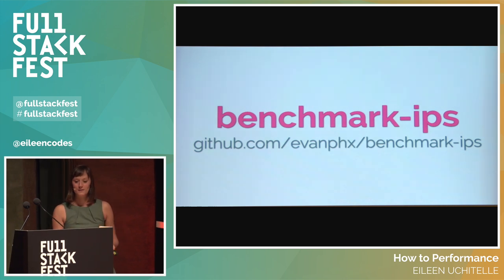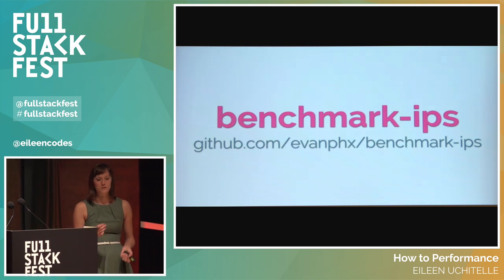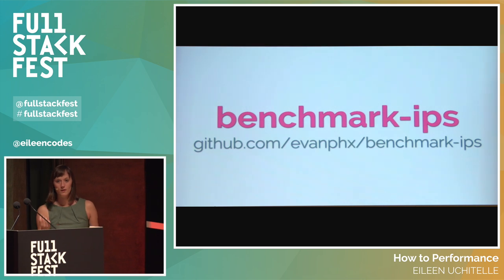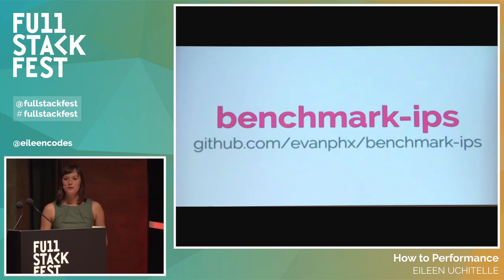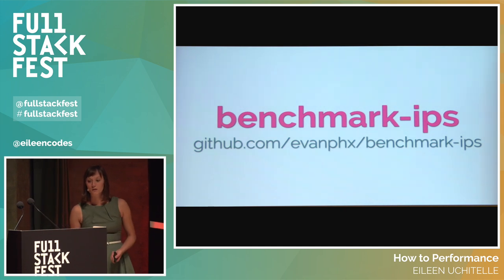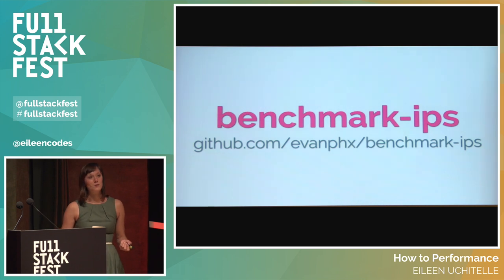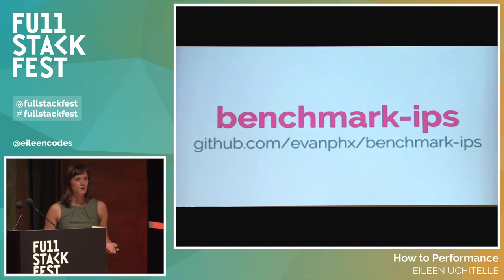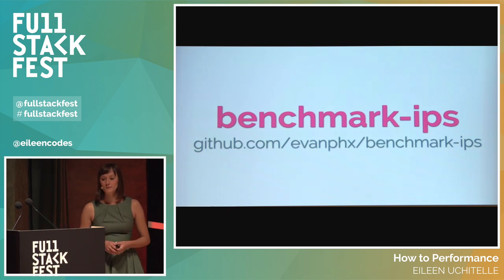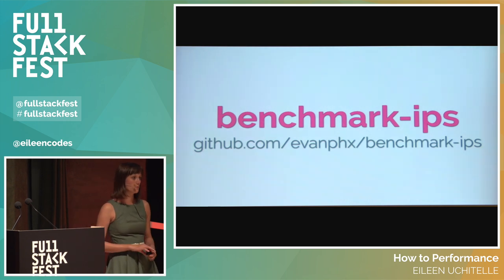Benchmark IPS means you can figure out your code is faster because you can run more iterations. You can run a block of code 20 times versus five times. It really takes the guesswork out of figuring out the number of runs it takes to get a good average. It also provides the percent of standard deviation so that you know how far spread out your results are from that average. Benchmark IPS allows you to focus on the results rather than the data points when benchmarking your code.